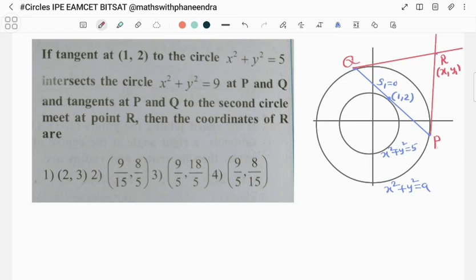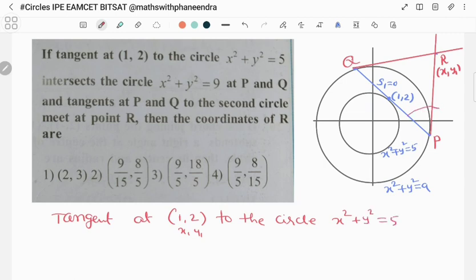Indirectly this is called, PQ is called chord of contact with respect to R. So first tangent equation we will calculate. Tangent at (1,2) to the circle x² + y² = 5, this is called chord of contact.